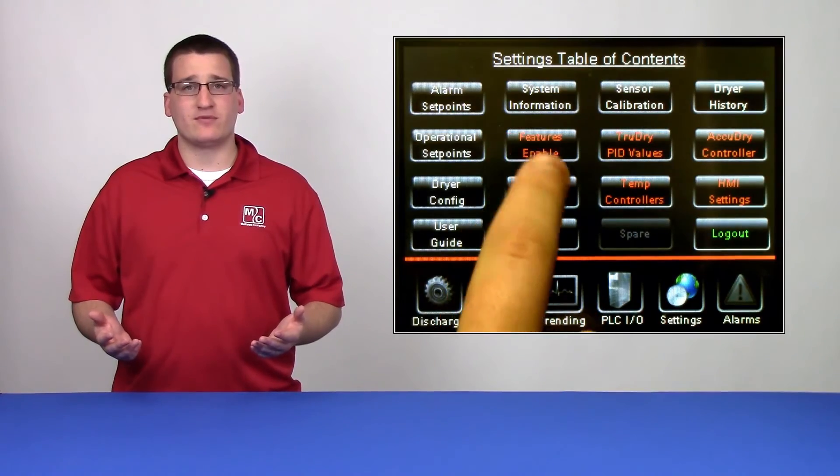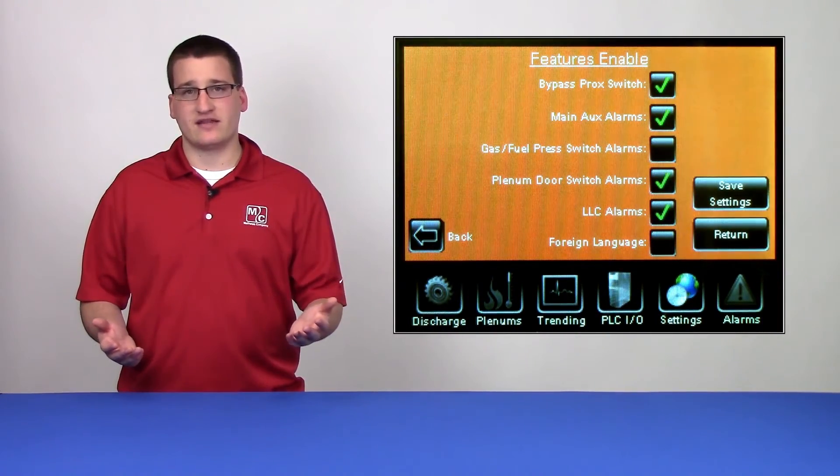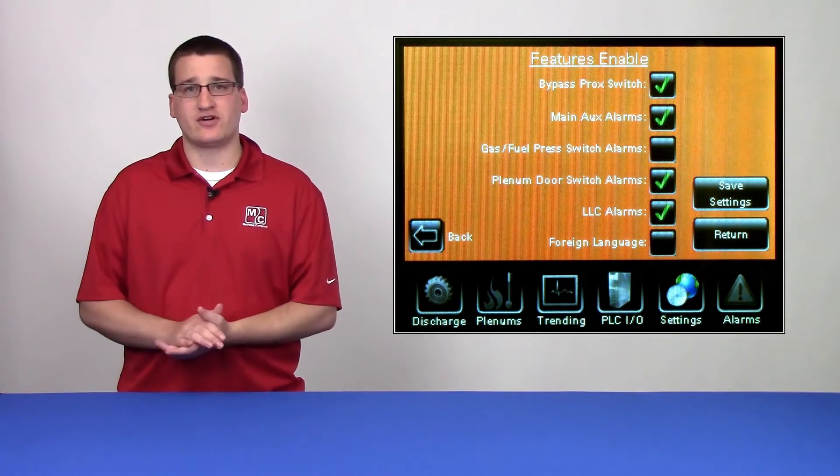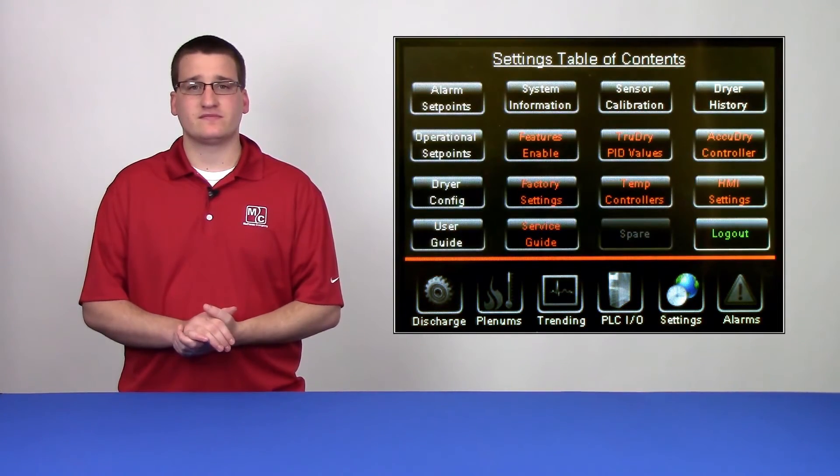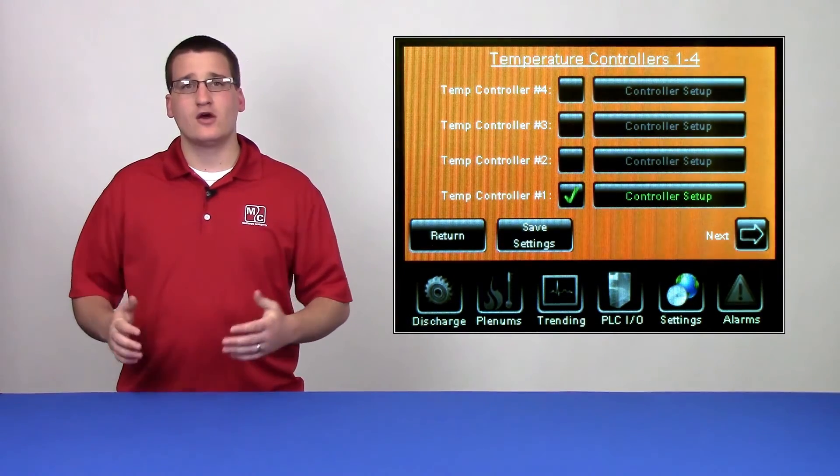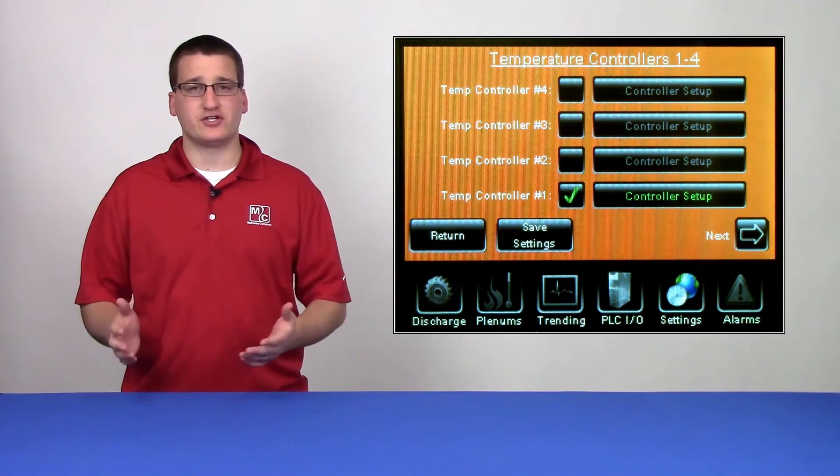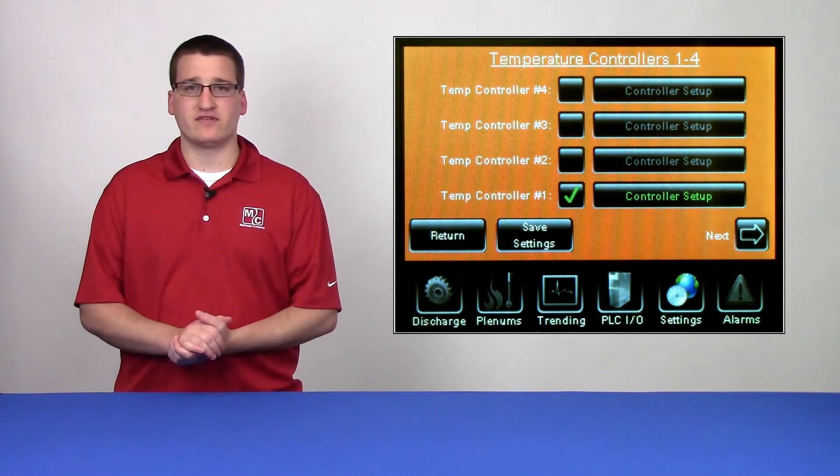Go through your Features Enable. You want to make sure that the correct sensor has been picked and also that anything you have activated, such as AccuDry, is picked. And also you'll have to activate any temperature controllers that are on the dryer. Once you've gone through the settings and you're confident that everything has been turned on that should be, you've finished the update for this dryer.